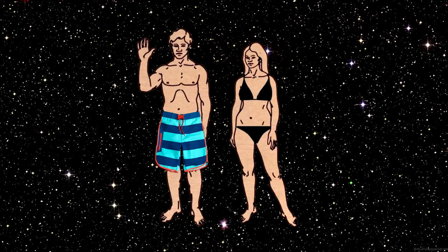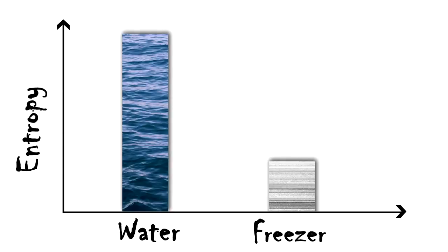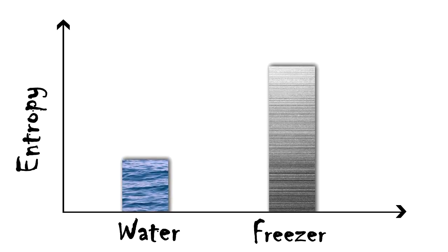But complexity doesn't come for free. If you want to freeze water, making it more organised, you'll need a freezer. And for that little bit of order, lots of disorder is produced just by the freezer running in the first place. A lot of disorder for a little order.